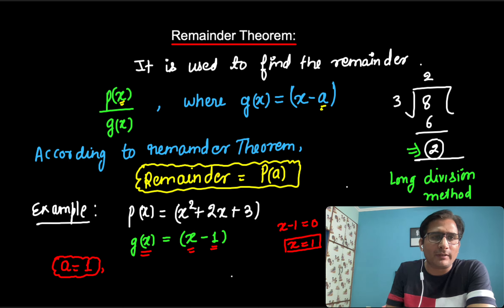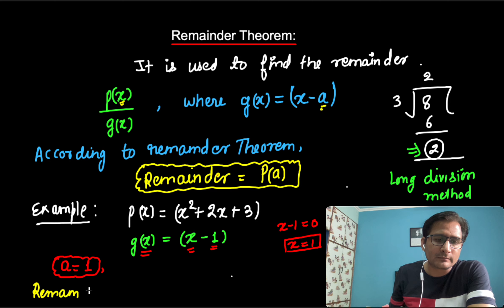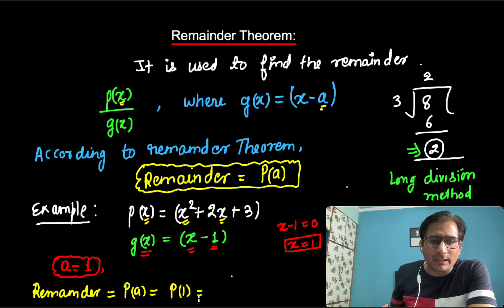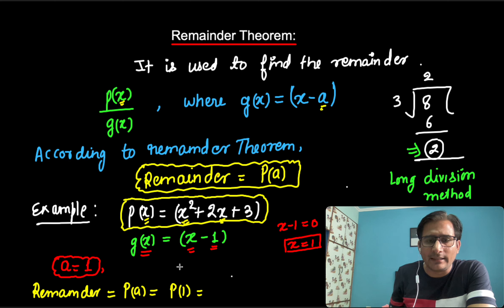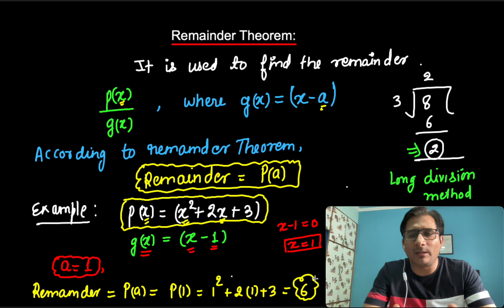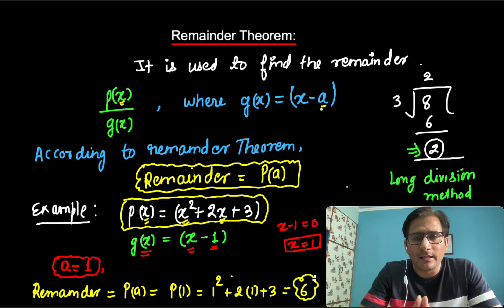Now applying the Remainder Theorem, the remainder is equal to P(a), which is P(1). To find P(1), we replace x with 1 in the polynomial. So it becomes 1² + 2×1 + 3, which equals 1 + 2 + 3 = 6. So 6 is the remainder when we divide P(x) by G(x). This is the short method to find the remainder without using the long division method.